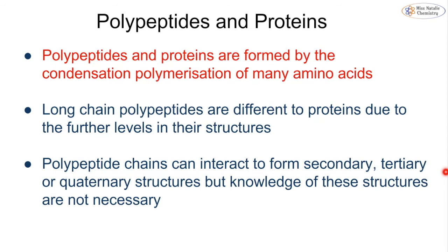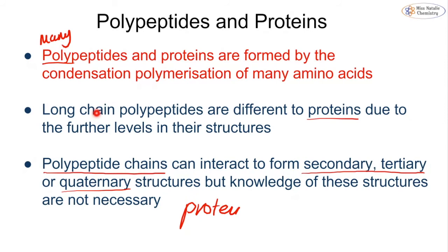You may be more familiar with the term polypeptide. Poly means many, so this is many peptide bonds — these are long chain polymers formed by the condensation polymerisation of many amino acids. Long chain polypeptides are slightly different to proteins because proteins have further levels in their structures. We make the polypeptide chain with all the amide groups formed by condensation polymerisation, and then these can interact in various ways to make secondary, tertiary, or quaternary structures — these are our proteins. We are not required to know the structures of these for the chemistry course.